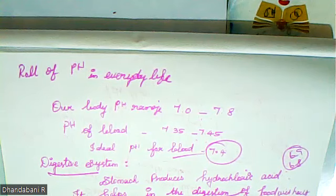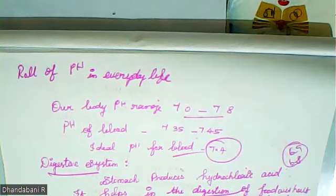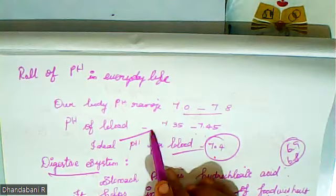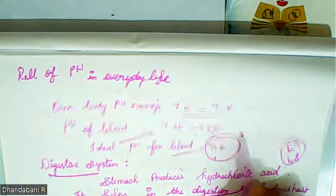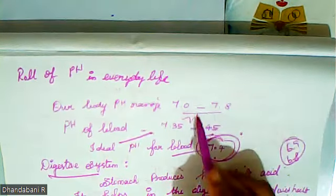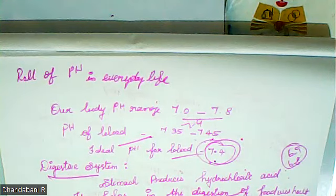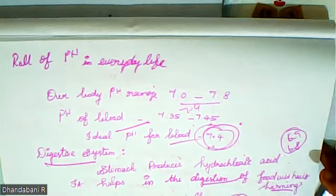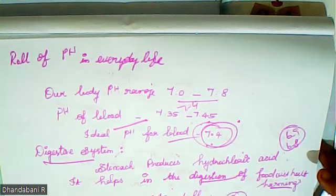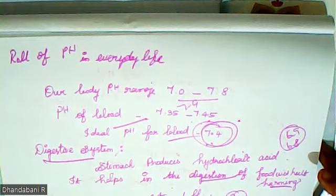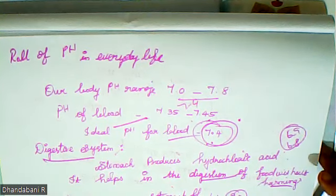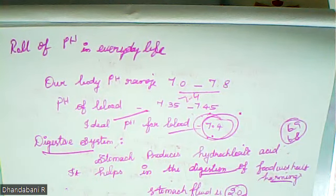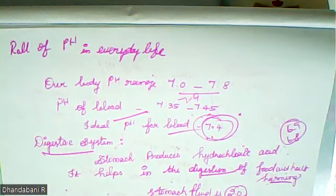The pH of blood is 7. Our body pH range is 7.0 to 7.8. Regarding the digestive system, we already know that HCl acid is secreted in our body. HCl acid means definitely acidic nature is present. The stomach produces hydrochloric acid which helps in the digestion of food but does not affect the stomach itself.